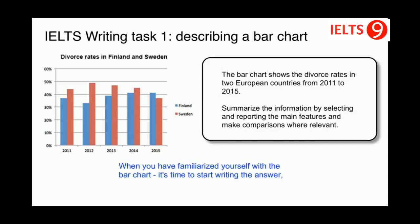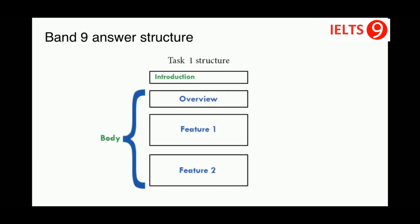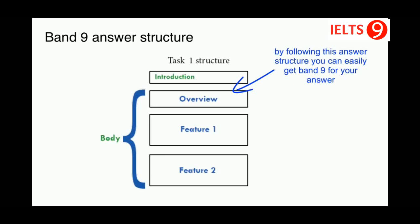When you have familiarized yourself with the bar chart, it's time to start writing the answer following the band 9 answer structure. Here is the band 9 answer structure for IELTS writing task 1. By following this answer structure, you can easily get band 9 for your answer.